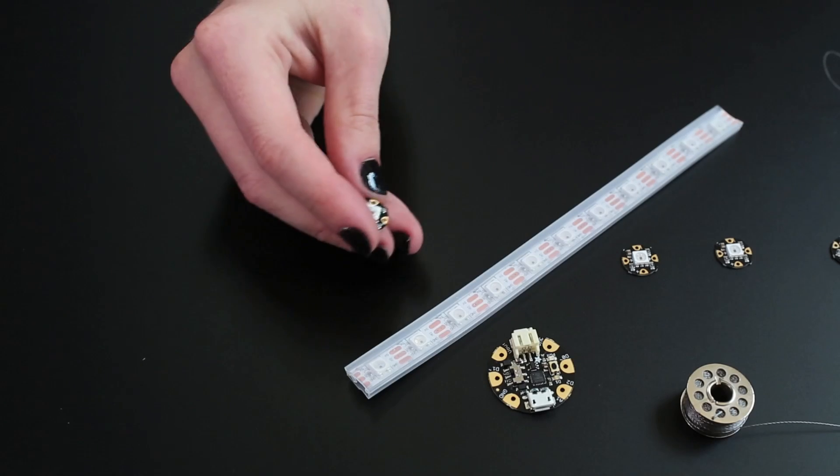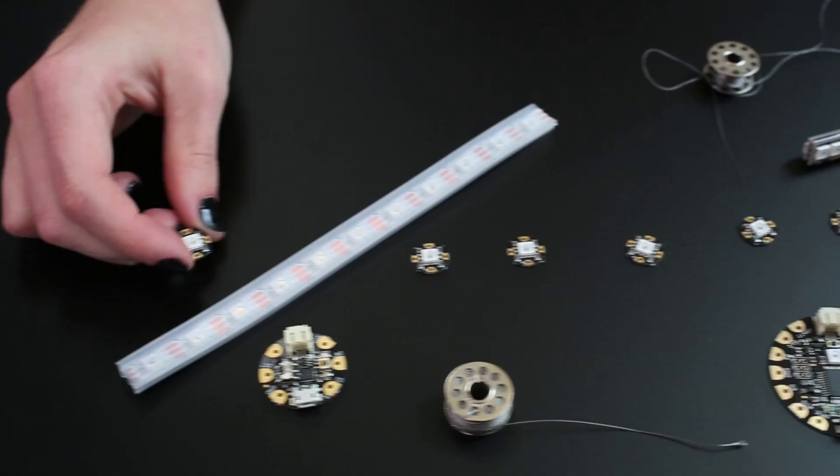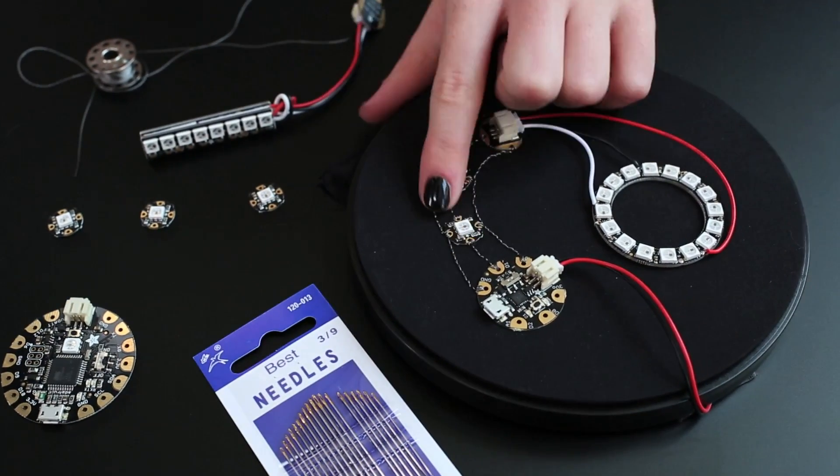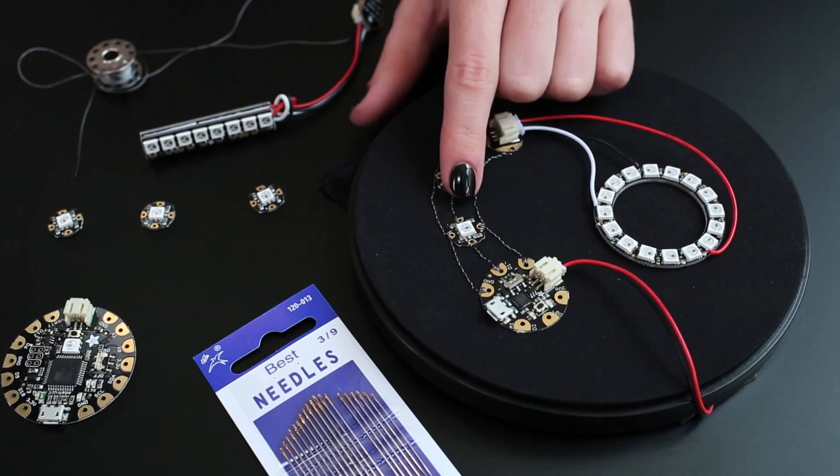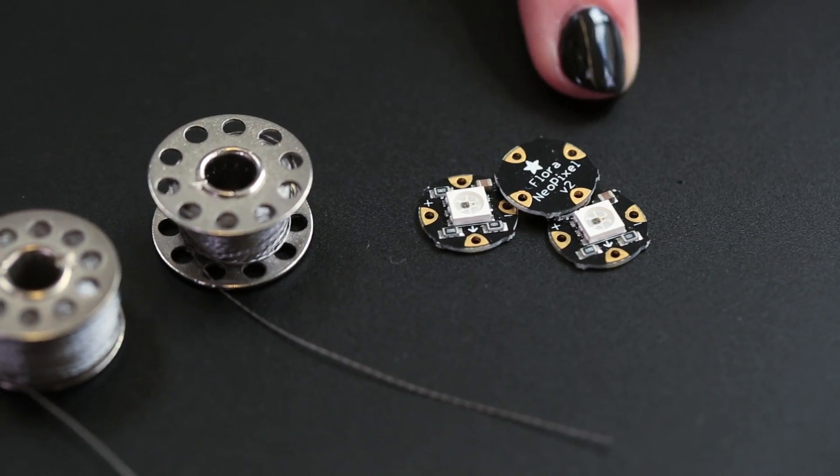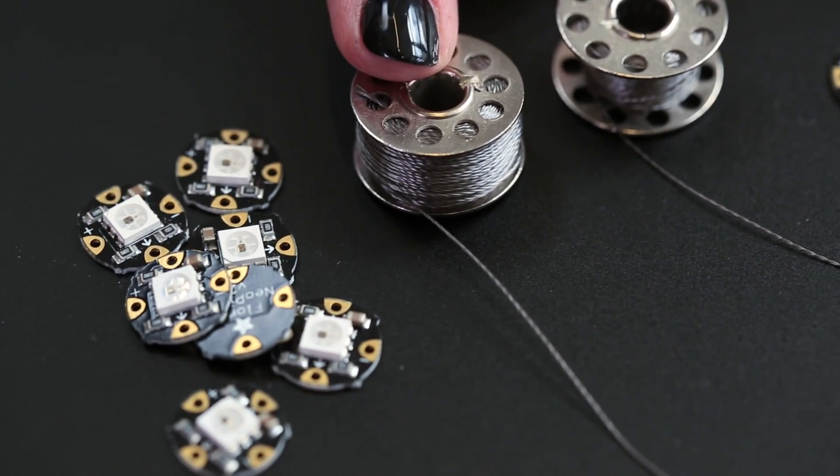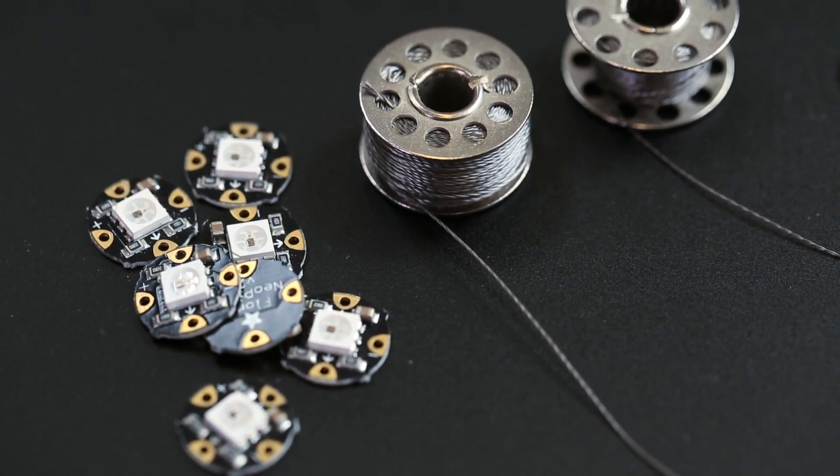These sewable NeoPixels have the same addressable RGB LEDs as NeoPixel strips and rings, but the circuit boards have large pads designed for stitching with conductive thread. For just a few pixels, two-ply stainless steel thread works great and is a bit easier to wrangle than the thicker 3-ply, which I'd use for any circuit with more than 5 pixels.